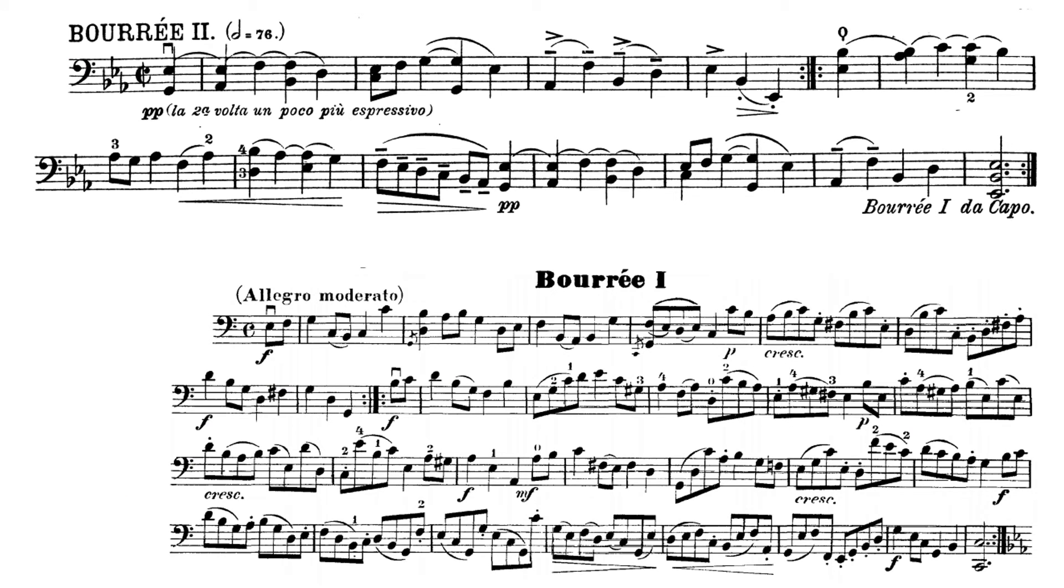Okay, here are two other examples from the Bach cello suites that show these two types of binary. And they're actually both bourées, which is a type of French dance. Here's bourée number two from the fourth cello suite.